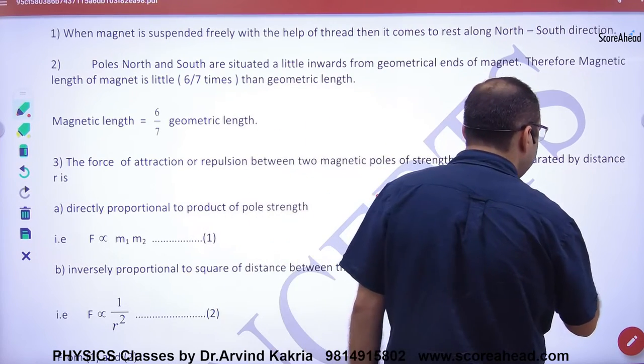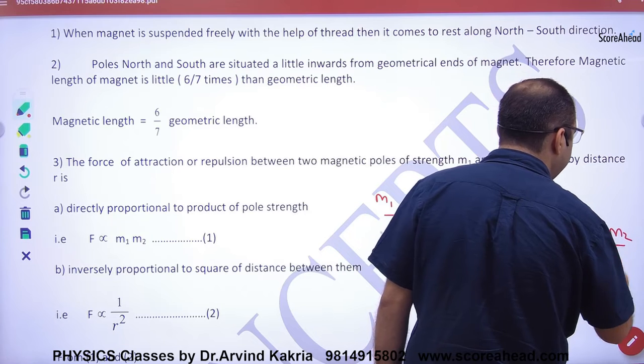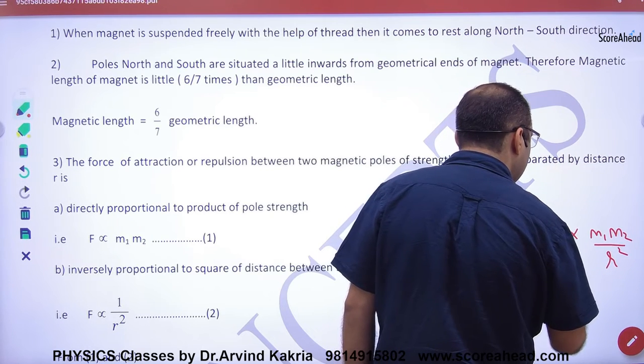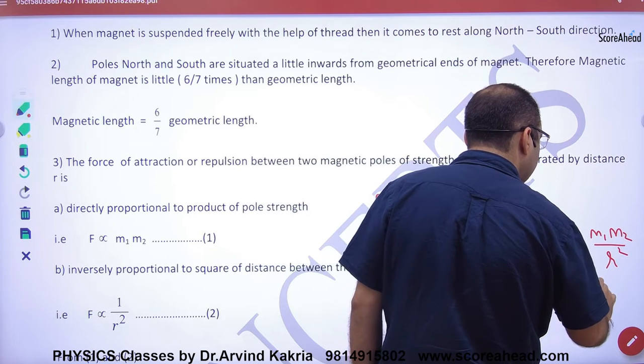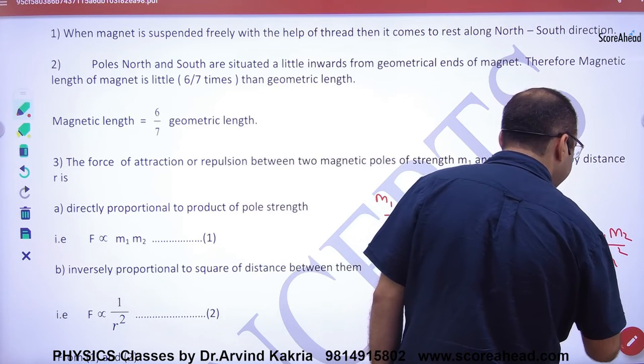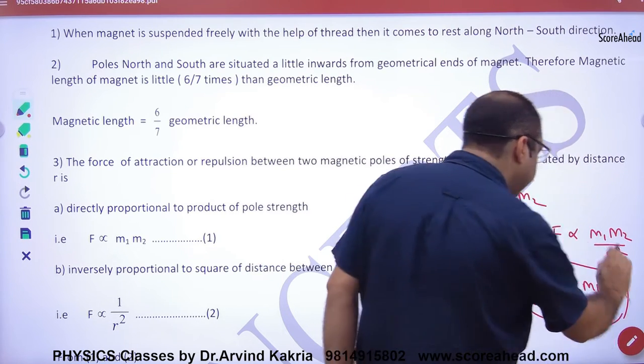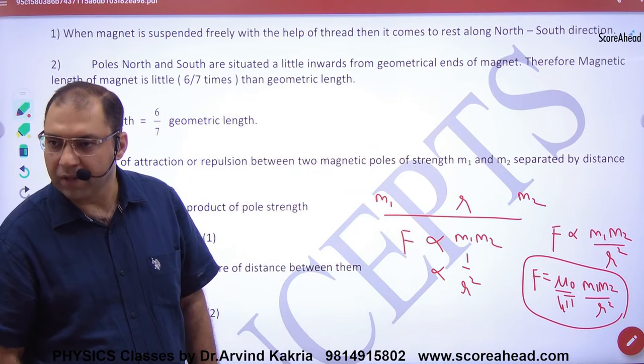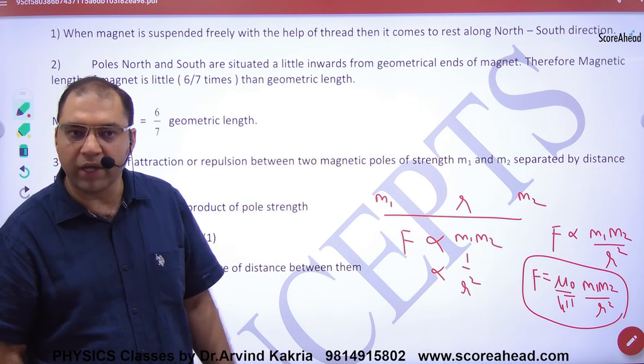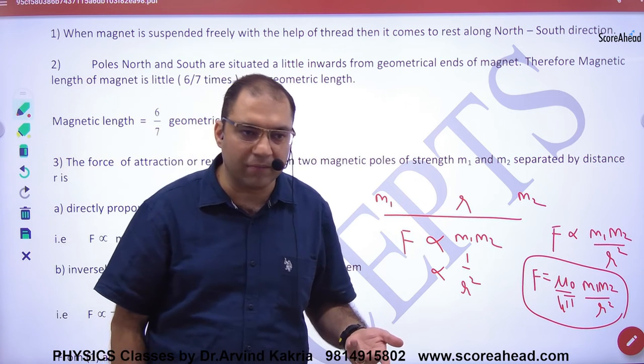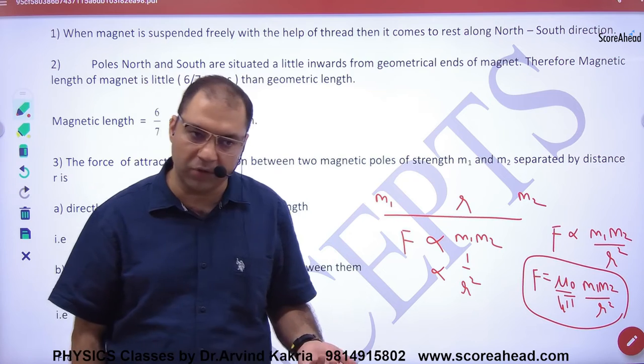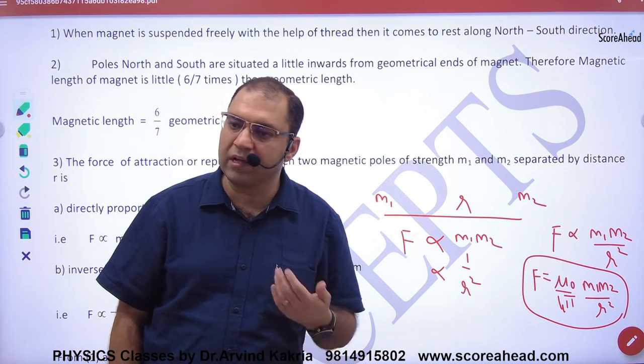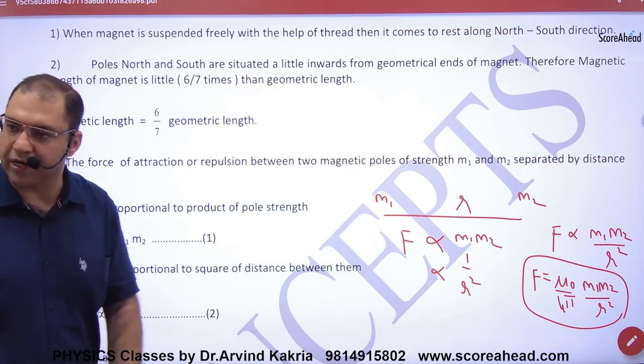Toh force directly proportional to M1 into M2 by R square. Toh force is some constant mu nought by 4 pi, M1 M2 by R square. Kya yeh step clear hai haan tak? Dekha hai lagta formula? Coulomb's law? Toh yeh hai Coulomb's law in magnetism. Woh kya tha Coulomb's law in electrostatics. Toh step number one clear hai. Coulomb's law in magnetism bilkul waisi kaam karta hai jaisi se charges pe electrostatic Coulomb's law karta hai.